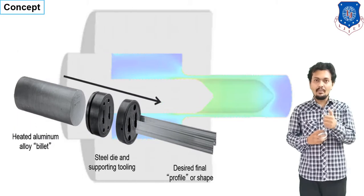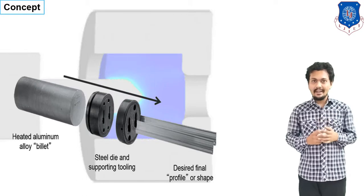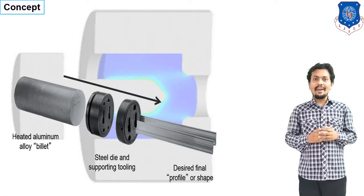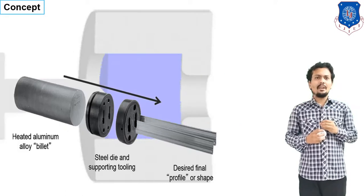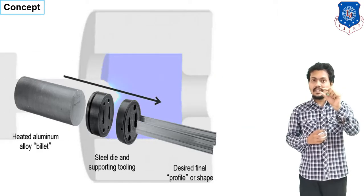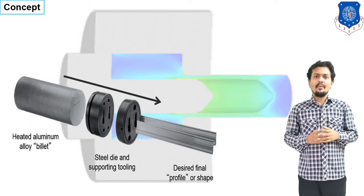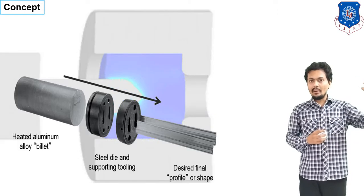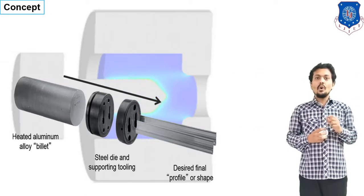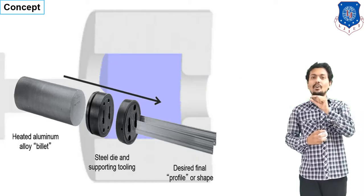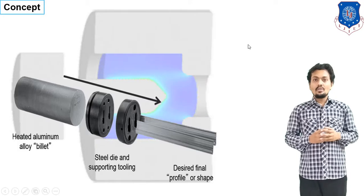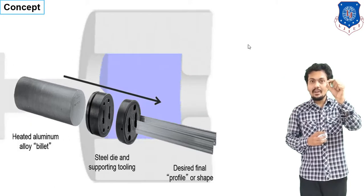Before starting the classification into direct and indirect, here I have mentioned the principle and figure for the extrusion process. When we apply the force, our material will come out through the die — a small diameter opening of different geometry. The billet or raw material is forced towards the die, and from the die opening our material flows out. Our final object will come out from the die opening. As per our shape requirement, we can design the die accordingly.